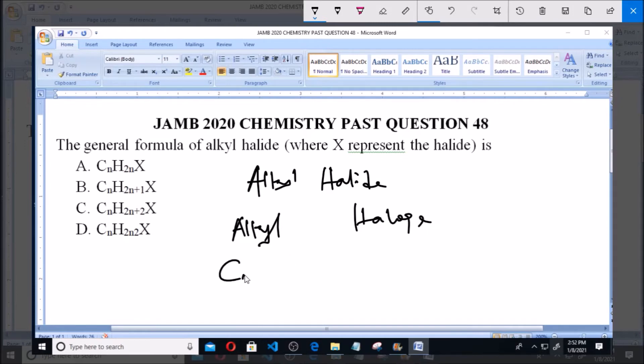represented by this formula: CnH2n+1. Now with the addition of halogen, which is said to be represented as X, it will definitely give us halides. This will give us CnH2n+1X. Now this is what